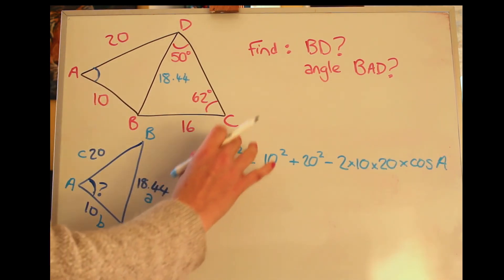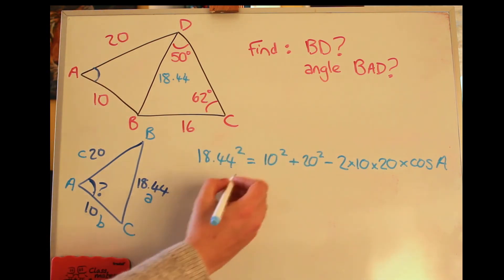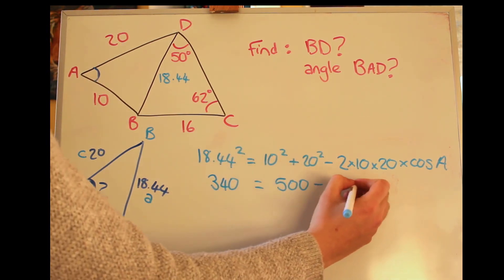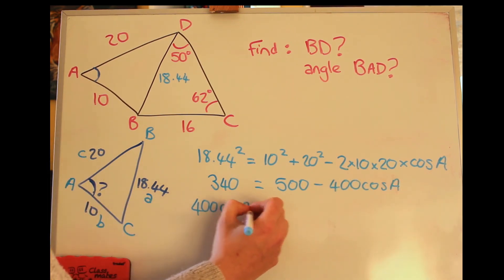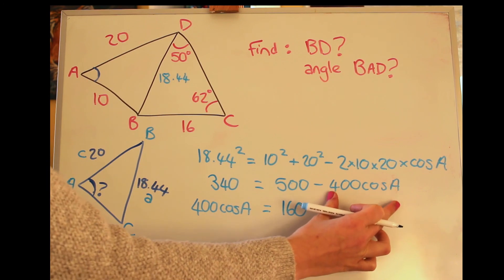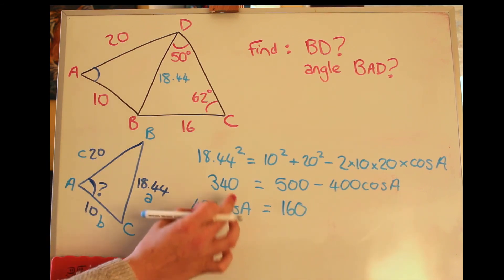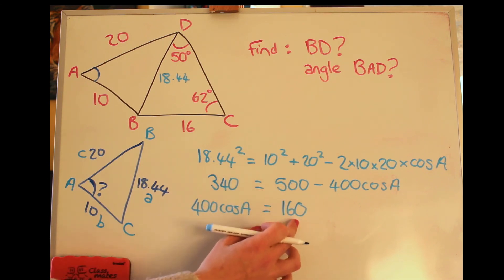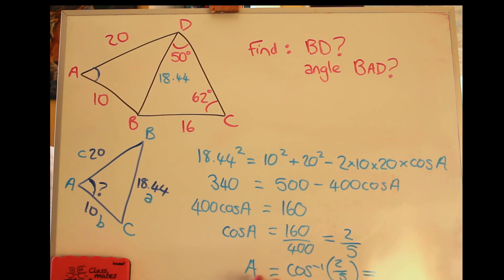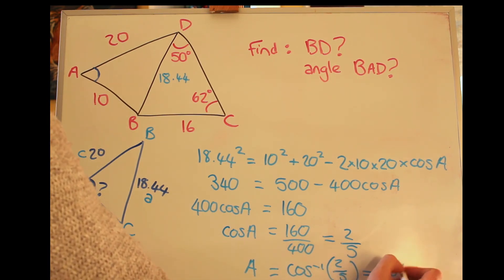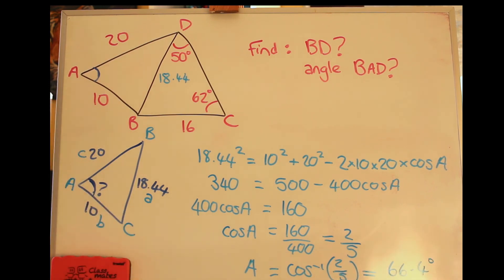Okay, and like before, I'm going to work out some of the numbers and rearrange. So I've pulled the negative 400 cos A, I've pulled onto that side to make it positive, and I'm taking the 340 off the 500 there to give 160. And then inverse cos gives us the angle, which I make to be 66.4 degrees. Sorry, I'm not sure you can actually see that very well because of the light, but that does say 66.4 degrees.